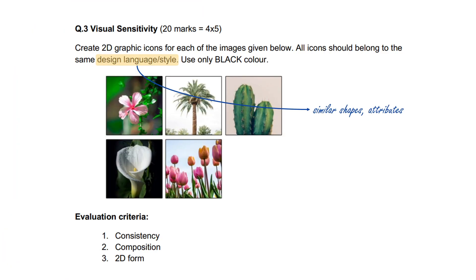Before we move ahead, also observe that the evaluation criteria for this question clearly says consistency and 2D form — which means regularity in shape and quality of shape. And here the composition means how we represent each icon while maintaining consistency. Look at the angle of representing image 1 and the last image — the last one is a view from the lower angle. If we draw the icon for the same image, it is not necessary to stick to the angle of each image, but it should be consistent throughout. If I am representing all images from the front view, then apply the same for the last image also.